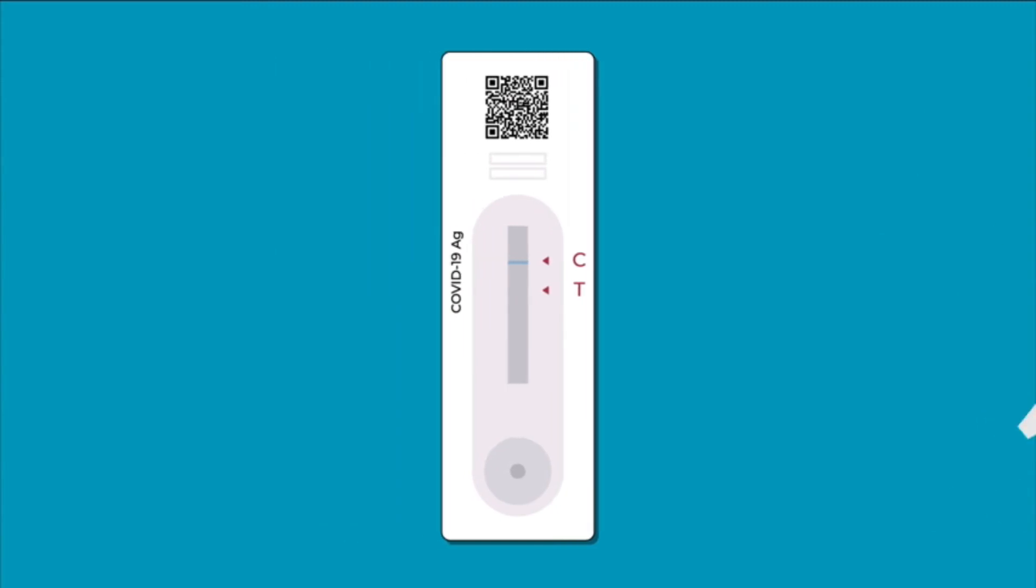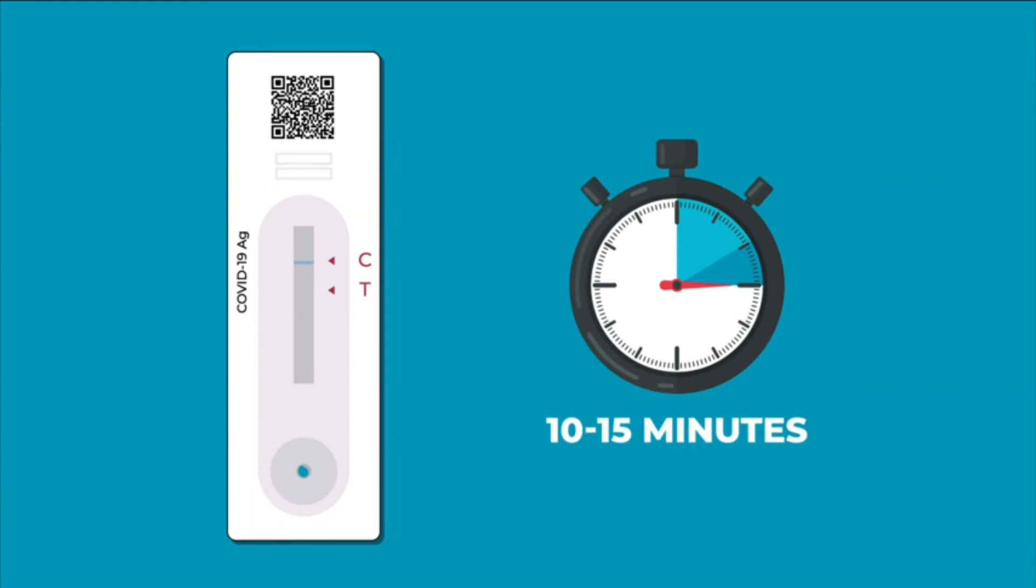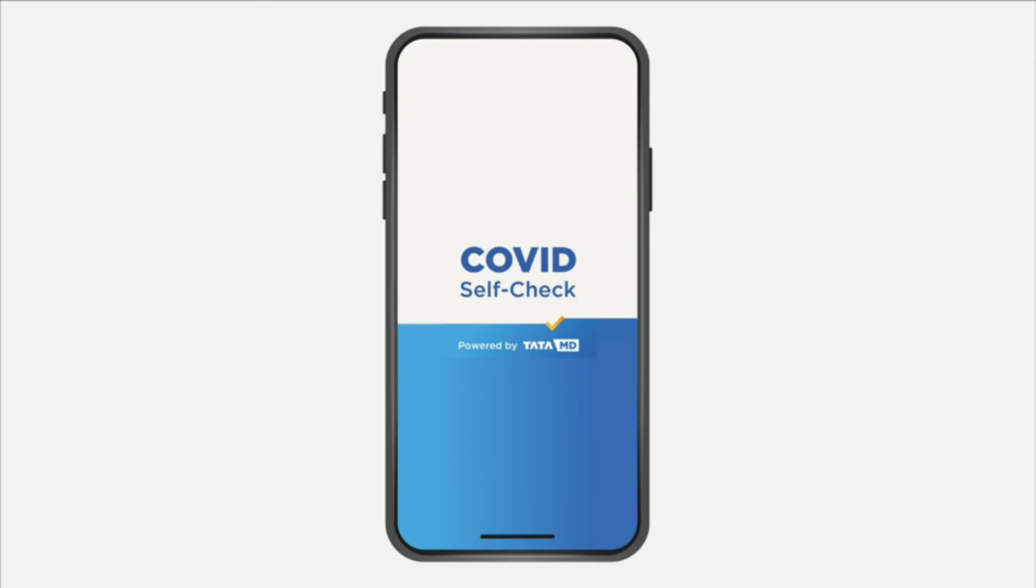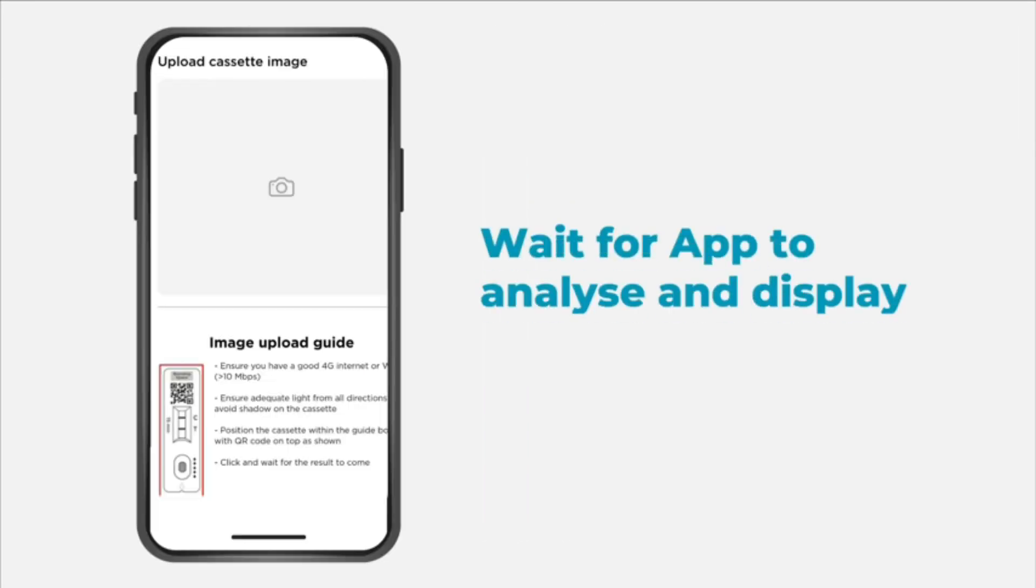In the sample well of the test cassette, add two full drops of extracted antigen buffer mixture by pressing the tube. Wait for 10 to 15 minutes for testing kit to generate results. Open the COVID Self-Check powered by TataMD app. Click picture of the testing kit. Wait for app to analyze and display test result.